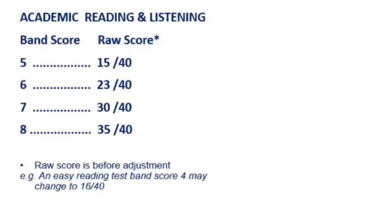What we mean by raw score is that in the real test, if the test in one geographic location — because the test is conducted in different locations — if the scores were all very good and everyone was getting a high mark in reading, showing that it's quite an easy test, then those marks might change and go up slightly. So 15 for the base score for band score 5 may go up to 16 or 17, and vice versa. If it was a difficult test, it might go down. Those scores are the same for academic reading and listening in terms of how that scoring system works.